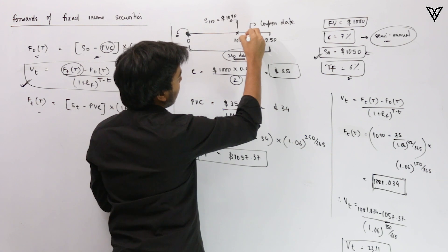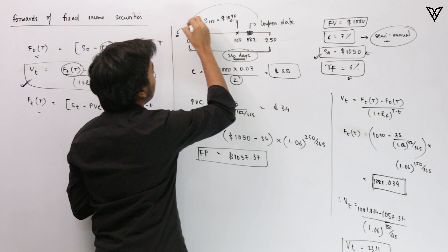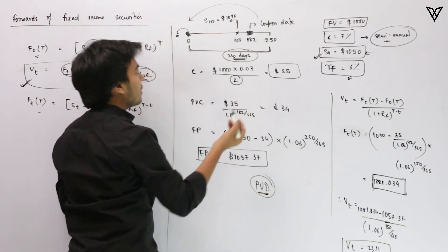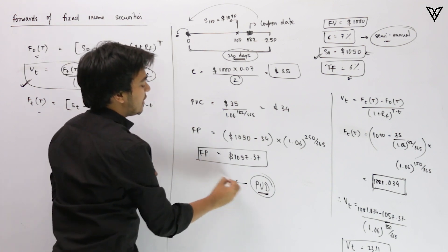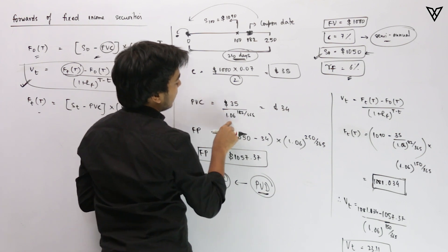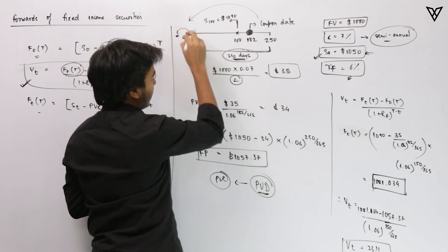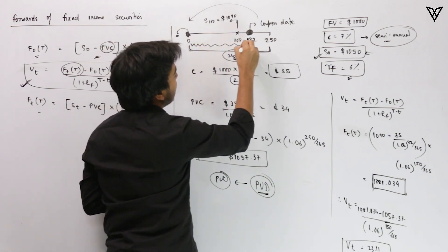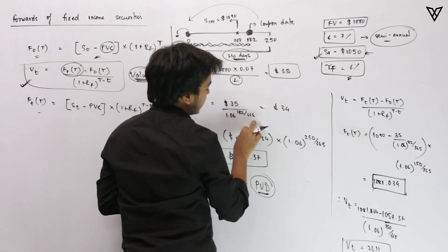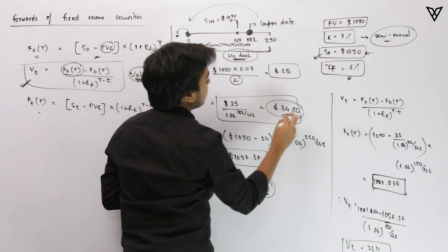Since we are calculating the forward price, we need the PVC — the present value of coupon — just as we previously calculated the PVD (present value of dividends). The coupon amount is $35. We discount it: $35 divided by 1.06^(182/365). Once you do that, you get a present value of approximately $34.00. Please pause the video and verify this calculation yourself.